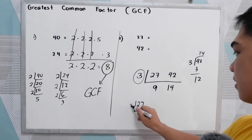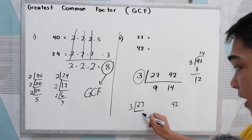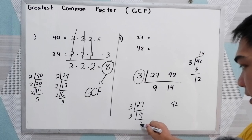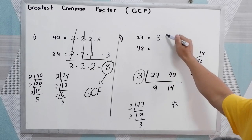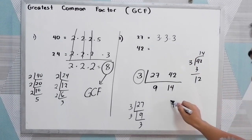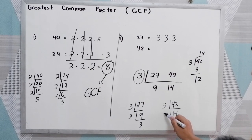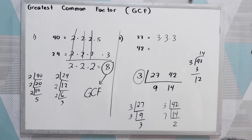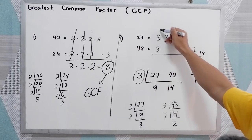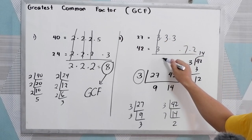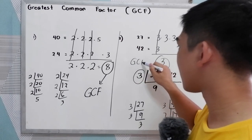Now let us verify using the separate prime factorization method. 27 is divisible by 3, giving 9, which is also divisible by 3. So the prime factors of 27 are 3 times 3 times 3. For 42, we have 3 times 14, which breaks down to 3 times 7 times 2. The common factor is 3, so aligning the common factors gives us a GCF of 3.